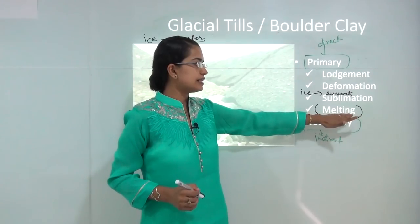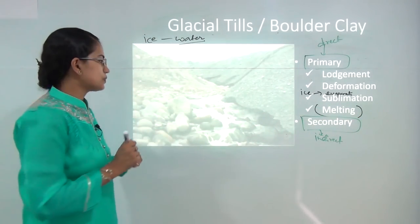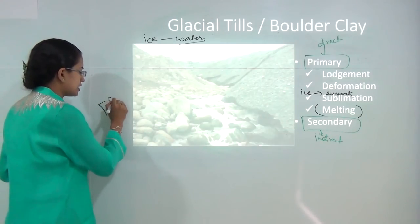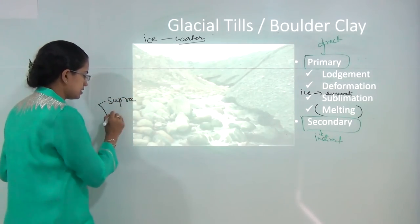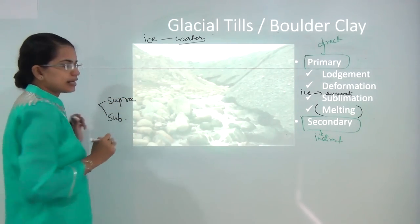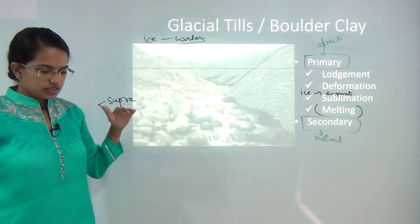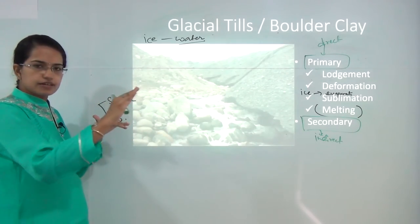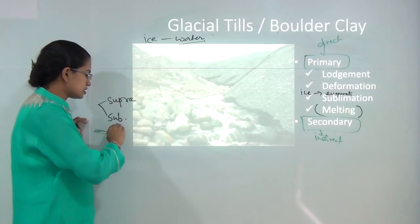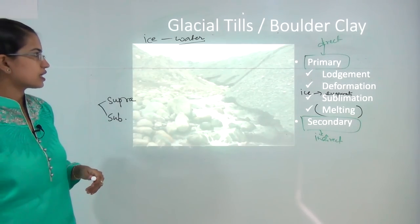Melting tills can further be classified into two types: supratills, which are towards the upper surface of the glacier, and subtills, which are formed towards the lower surface of the glacier.